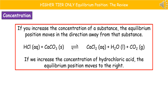The second factor is concentration. If we increase the concentration of a substance, the equilibrium position moves in the direction away from that substance. In this example, if we increase the concentration of our hydrochloric acid, then the equilibrium position moves to the right, away from the hydrochloric acid.